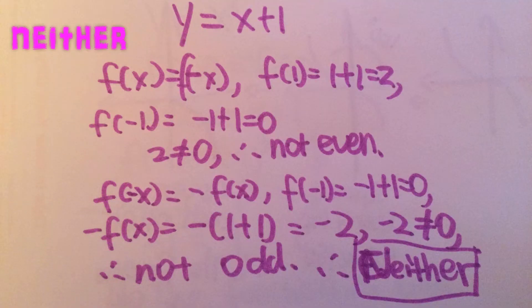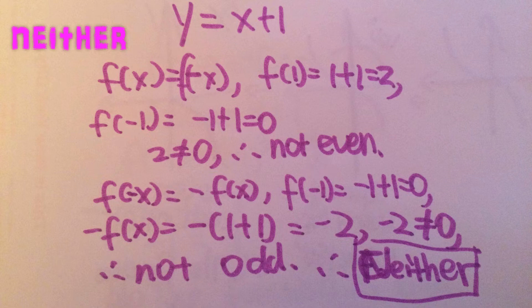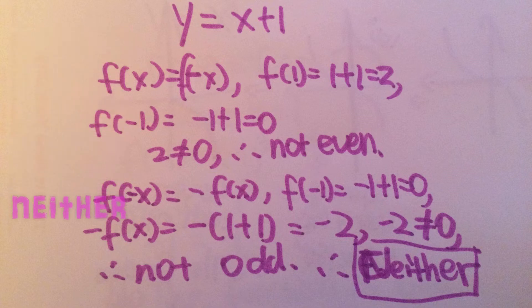Now we are going to take a look at the condition called neither. If we look at y equals to x plus 1, according to f of x equals to f of negative x, f of 1 equals 2 and f of negative 1 equals 0, and 2 does not equal 0. Therefore the function is not even. Since it's neither even nor odd, the function is neither.